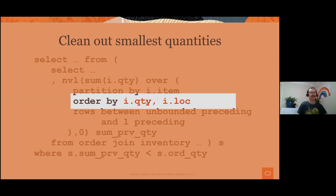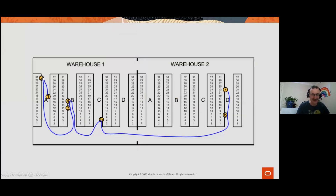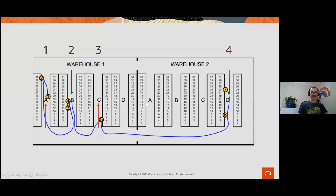Let's stick with the 'clean out smallest quantities' strategy, which illustrates the next problem: walking the warehouse efficiently. With a naive ordering, the picker starts at aisle 1, goes to the top, doubles back, doubles back again — not the fastest route. Instead, we want a zigzag: go up aisle 1, come back down aisle 2, up aisle 3, down aisle 4. We need to build this routing logic into the same SQL statement.